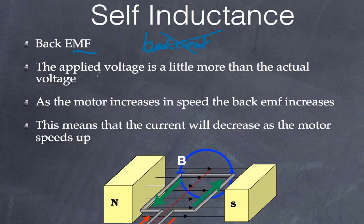Secondly, what you need to understand is that the applied voltage is a little bit more than the actual voltage. So if your input is 12 volts but you end up getting a negative 2 volt EMF because of the motion, your net result will be 10 volts.